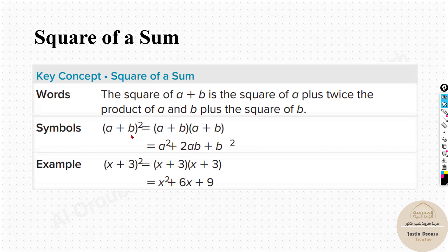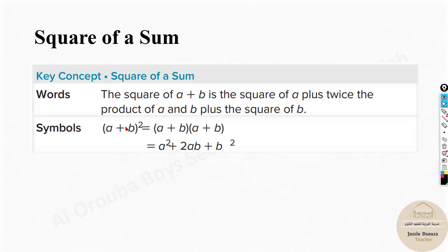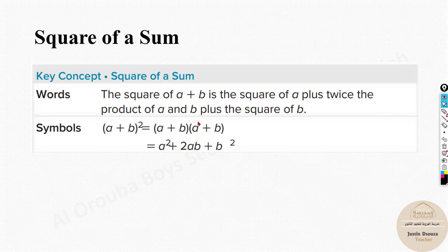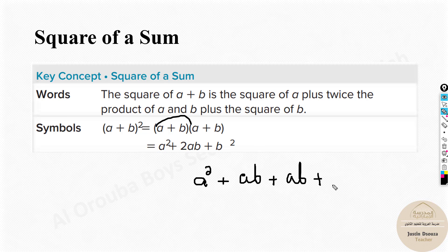We will look into the square of a sum now. The first formula is (a+b) whole squared. You can split it into two binomials: (a+b)(a+b). Using the distributive property or FOIL method: a times a is a², a times b is ab, b times a is ab, and b times b is b². The two ab terms combine to give 2ab, so the result is a² + 2ab + b².